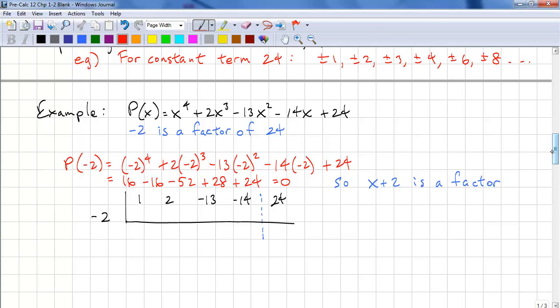Here's an example. We have P(x) is a quartic, and we're looking for factors of 24, as we just did here. I could try plus or minus 1, but I'm going to do minus 2 first. So we plug this in. P of negative 2. Negative 2 to the power of 4 is 16. 2 times negative 2 to the power of 3, that's 2 times negative 8, so that's minus 16. We have negative 13 times negative 2 squared, so that's negative 13 times 4, that's negative 52. Negative 14 times negative 2, that's positive 28, and plus 24.